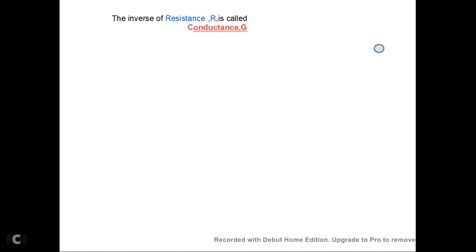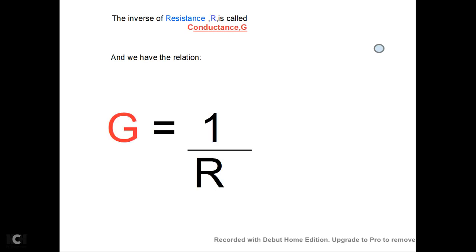Conductance G is the inverse of resistance. G is defined as the reciprocal of resistance, that is 1 by R.